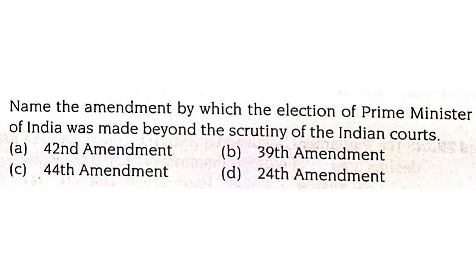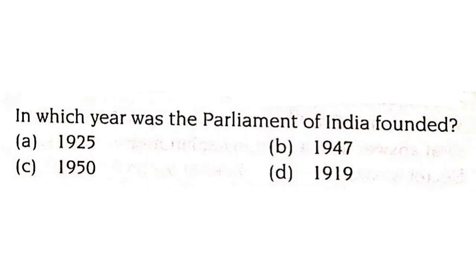Name the amendment by which the election of the Prime Minister of India was made beyond the scrutiny of Indian courts. It is the 39th amendment in the year 1975, by which the election of the Prime Minister of India was excluded from the scrutiny of the Indian courts. In which year was the Parliament of India founded? It was founded in 1919.